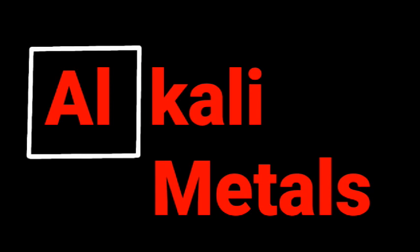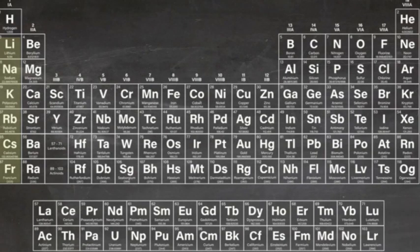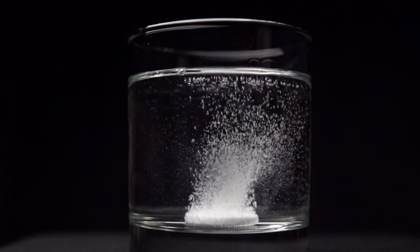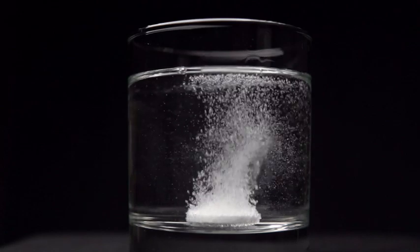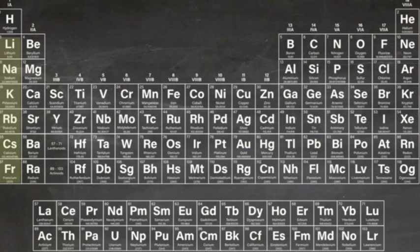Alkali metals. The alkali metals make up the first column or group of the periodic table and comprise lithium through to francium. They're called alkaline metals because they easily form compounds that dissolve in water to give basic or alkaline solutions. The members of this group are lithium, sodium, potassium, rubidium, cesium and francium. Hydrogen is technically in the same group although it really doesn't exhibit the same behavior as the true alkaline metals.